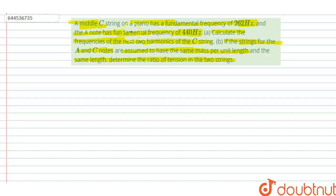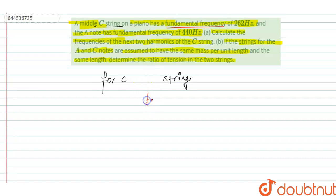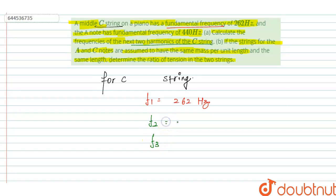For the C string, the fundamental frequency f1 is equal to 262 Hz. We have to find the values for the next two harmonics, that means we have to find f2 and f3.